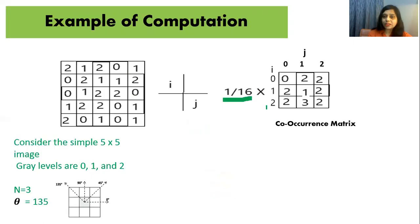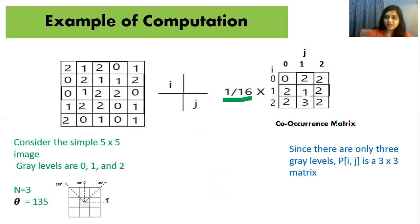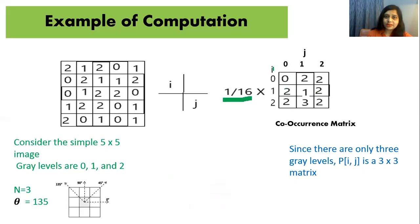We are going to multiply this co-occurrence matrix by one-sixteenth — or equivalently, divide by sixteen — to normalize the matrix. Since there are only three gray levels, it is a 3-by-3 matrix with i values zero, one, two and j values zero, one, two.